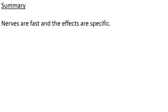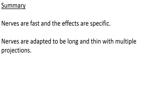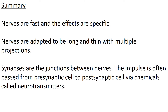To summarize: nerves are fast — they have to be to have survival value. They're also specific, so removing my hand rapidly from a sharp object only involves my arm muscles; it's not a body-wide event. Being long and thin means they can transfer information over relatively large distances, and the branches enable them to communicate with other nerves, muscles or organs. They join together at things called synapses, and these synapses allow the impulse to pass from one cell to the next via neurotransmitter molecules.